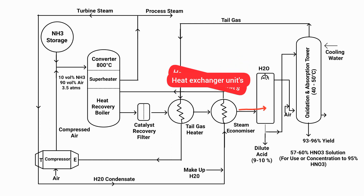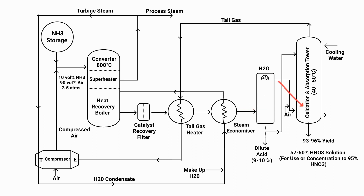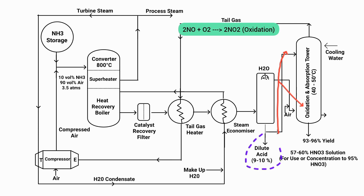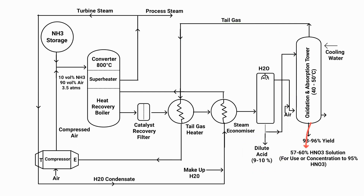Inside the cooling tower, the temperature of the nitric oxide gas is significantly reduced through the quenching process. The gas is then introduced into the absorption tower along with air and oxygen from the bottom, while a dilute acid solution of 90% water and 10% acid is pumped in from the top. Within the tower, oxidation and absorption take place: nitric oxide and air react to form nitrogen dioxide, which then reacts with water, leading to the formation of nitric acid. The solution obtained from the tower contains 60% nitric acid.